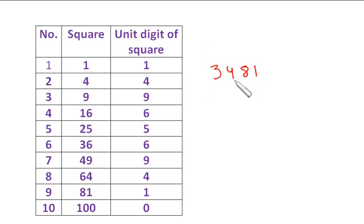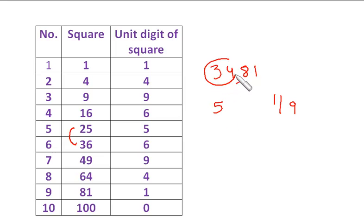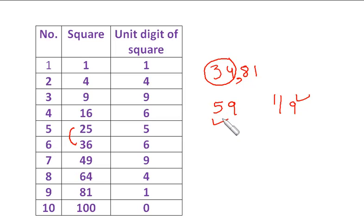Take 3481. Make the pairs: 81 and 34. Since 34 lies between squares of 5 (=25) and 6 (=36), the tens digit is 5. For the unit digit, the choices are 1 or 9. Multiply 5 by its next number: 5×6=30. Since 34 is bigger than 30, choose the bigger number: 9. So the square root of 3481 is 59.